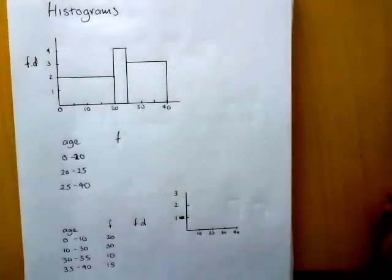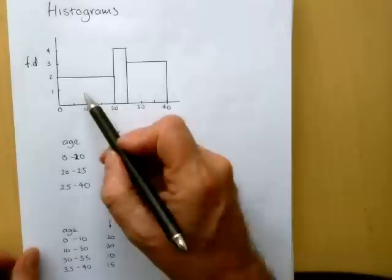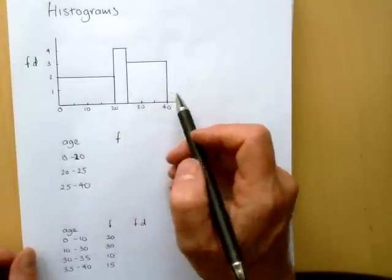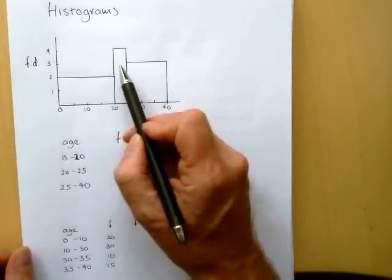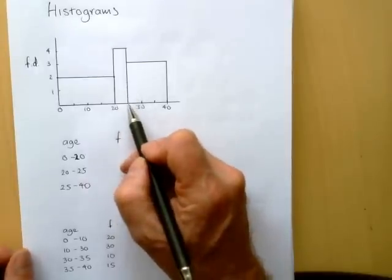FD stands for Frequency Density. What we're trying to show is that the area of each bar represents the frequency. So if one bar is twice as big as another bar, then that interval width has a frequency that's double the other interval.